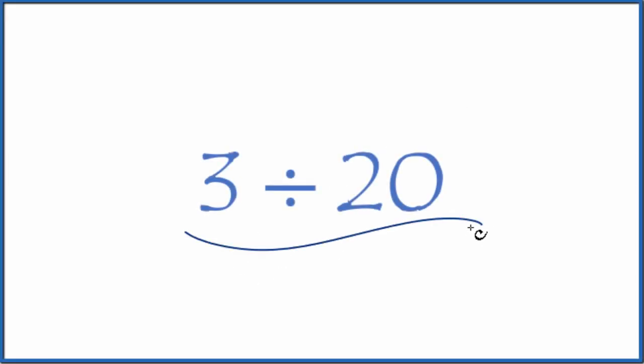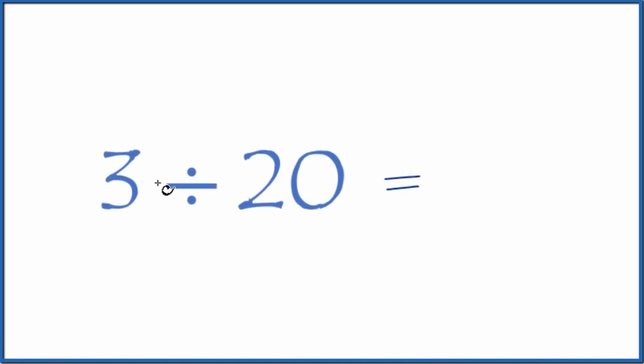If you need to divide 3 by 20, here's how you do it. Let's first consider this a fraction. It's just 3 over 20. It's the same thing as 3 divided by 20.